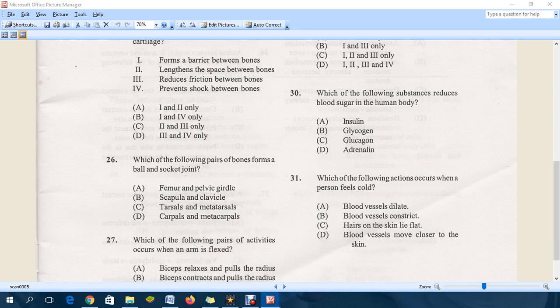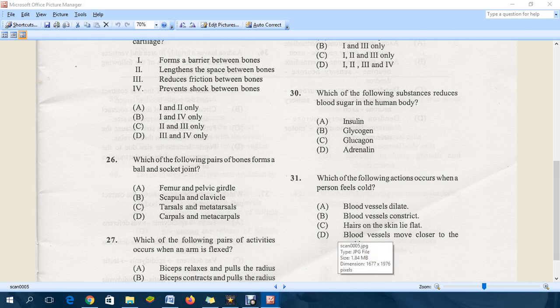Let's go to question 31: which of the following actions occurs when a person feels cold? B is the correct answer - blood vessels constrict. That means that the blood vessels get smaller and go deeper down under the surface of the skin, and that is of course to prevent too much heat from leaving the blood.